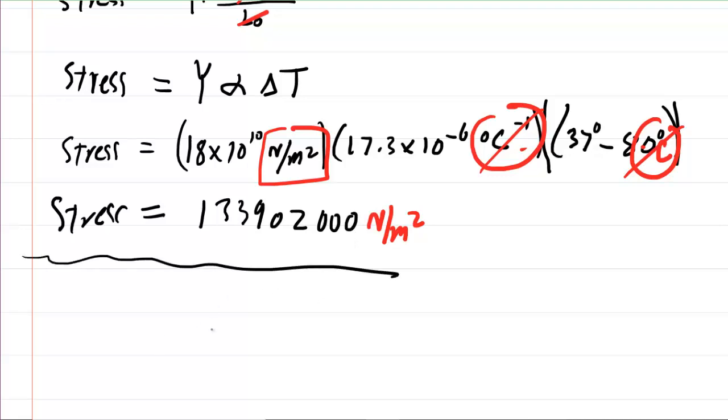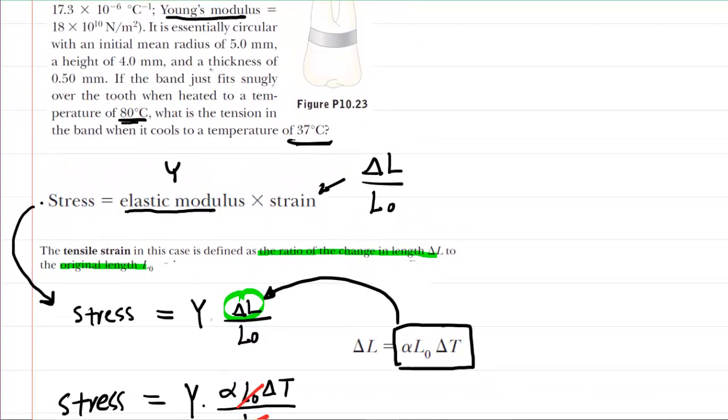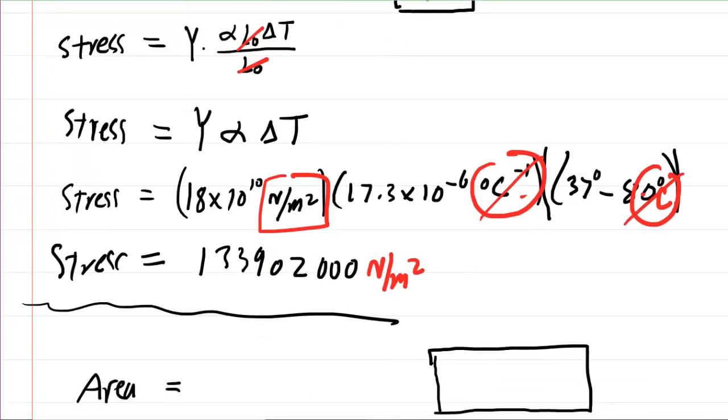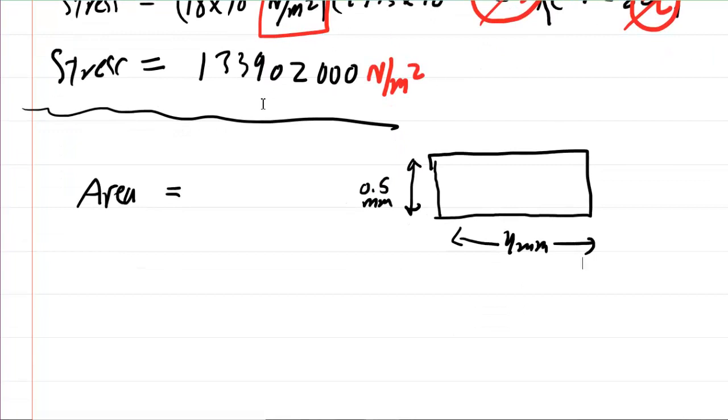So the next step in this problem is to actually figure out the area that this pressure is being exerted against. We know from the question that we have essentially a band whose thickness was half of a millimeter and a height of four millimeters. So if we want to imagine a rectangular shape here, this dimension would be half of a millimeter, and then this here is four millimeters. We can easily calculate the area against which this stress is being exerted because the area is just that width times that length.